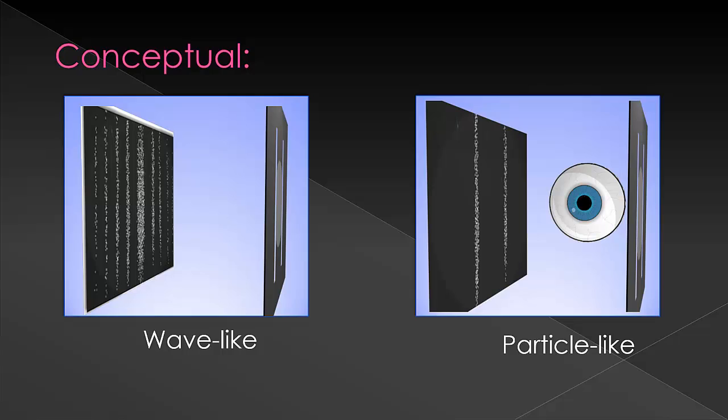Each of these dual natures of the quantum mechanical entity is associated with a measurable entity. The wave nature is associated with a known velocity where the particle is associated with a known position.